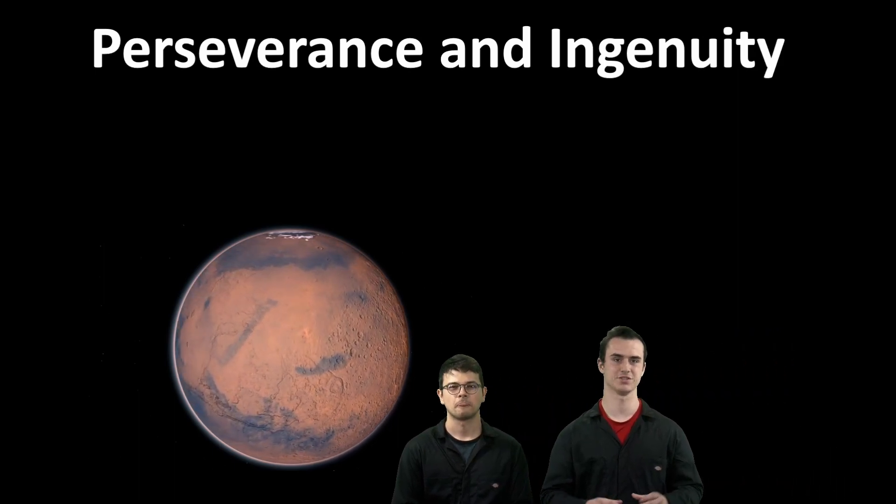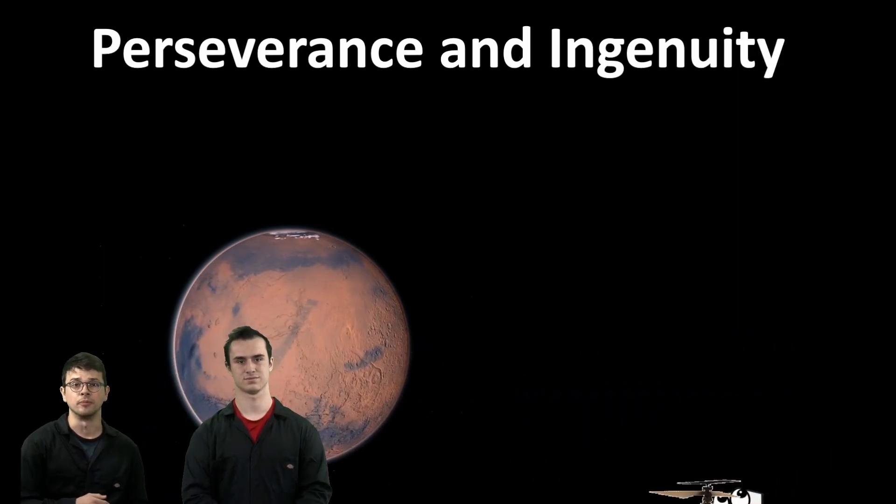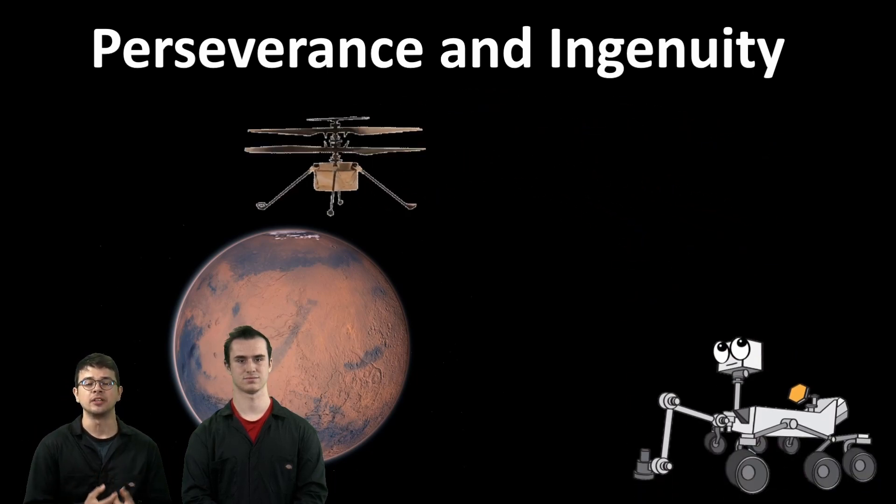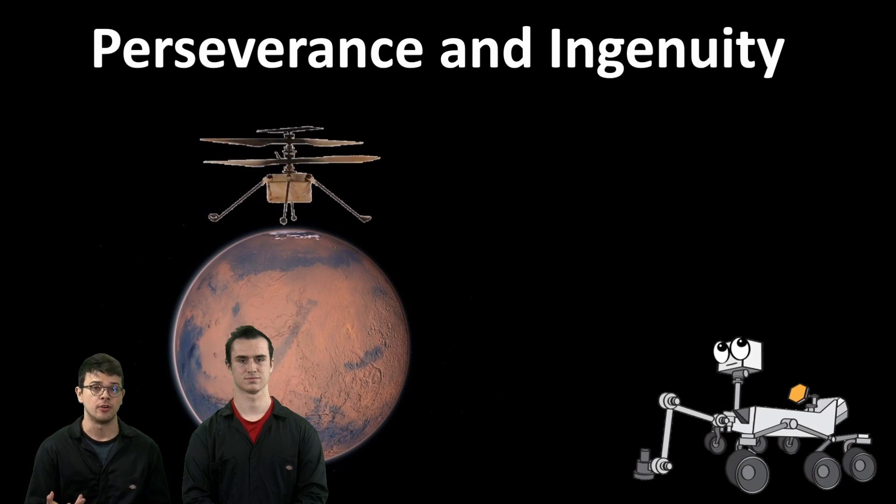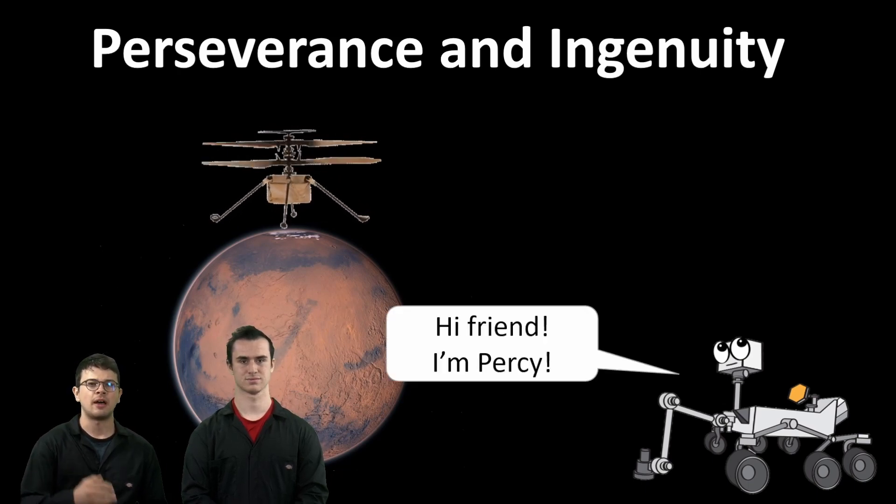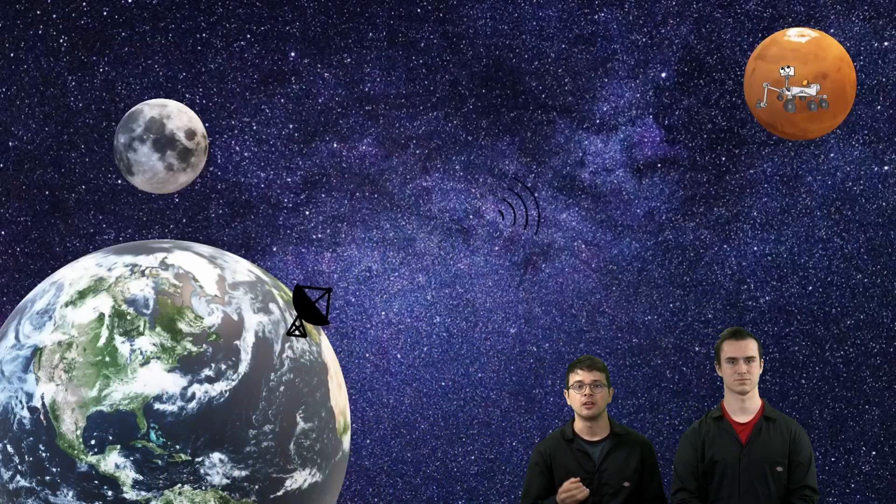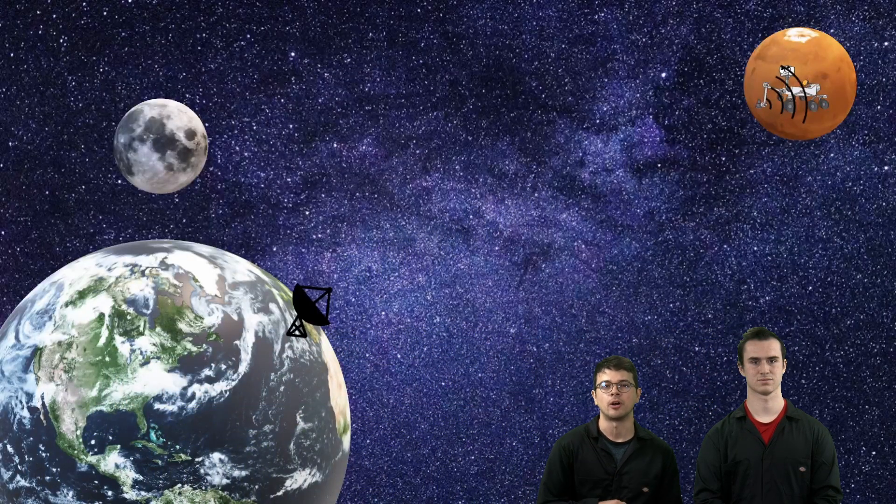But how do we control them, you may ask? Well, they both actually have the ability to navigate the difficult terrain on their own. But we do still have to tell it which rocks to explore. Also, it can take around 20 minutes for a command from Earth to reach Percy on Mars.